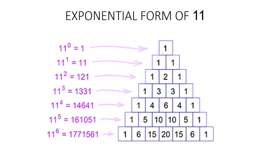Exponential form of 11. The entries in each row represent the powers of 11. For example, 11^0 = 1, which is the entry of the 0th row of Pascal's Triangle. Again, 11^1 = 11, which are the entries of the first row. This pattern is used to obtain the powers of 11 up to the 4th power. Subsequent powers of 11 are obtained from Pascal's Triangle in a slightly different manner, by carrying over if an entry is not a single digit number.